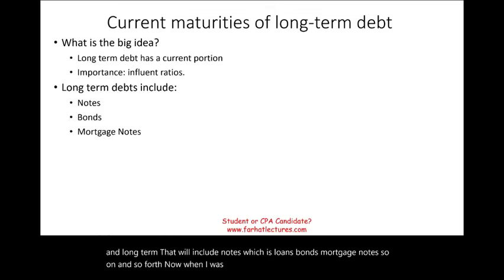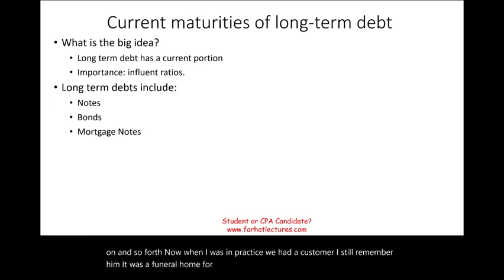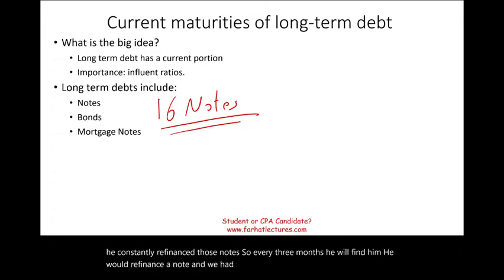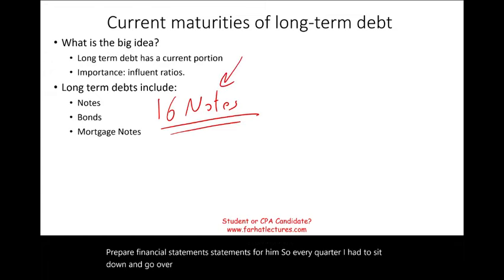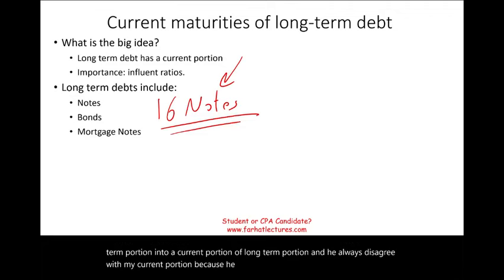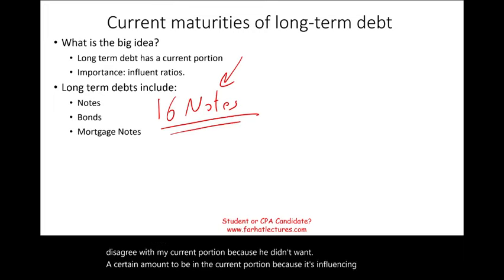When I was in practice, we had a customer — a funeral home. He had 16 different notes payable and constantly refinanced those notes, every three months refinancing a note. We had to prepare financial statements for him, so every quarter I had to go over 16 different loans, breaking the long-term portion into a current portion and long-term portion. He always disagreed with my current portion because he didn't want a certain amount in the current portion, as it influenced his current ratio and banks did not like this.